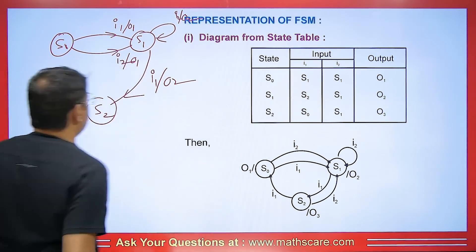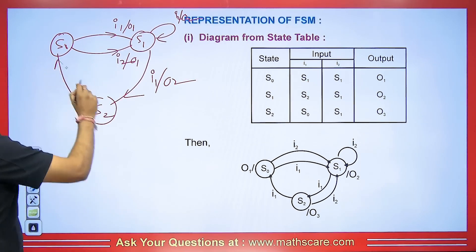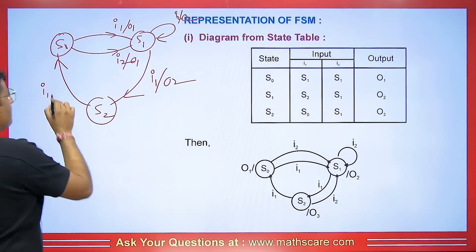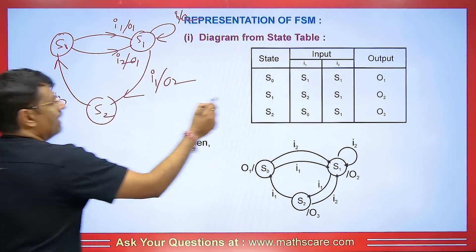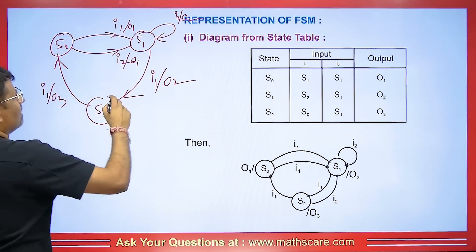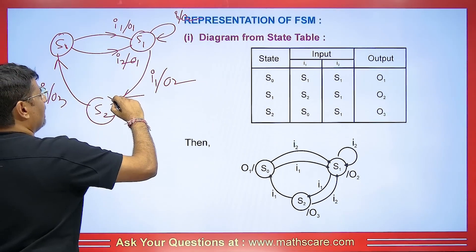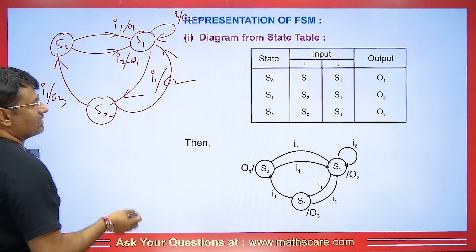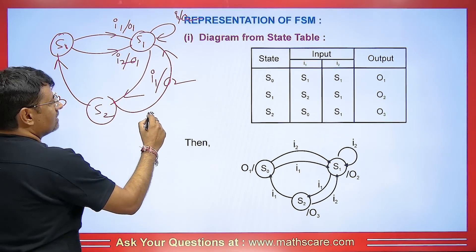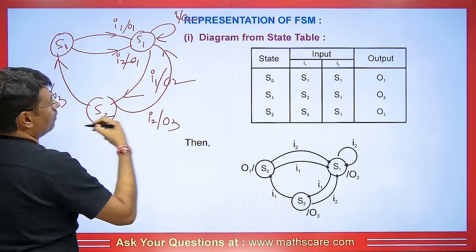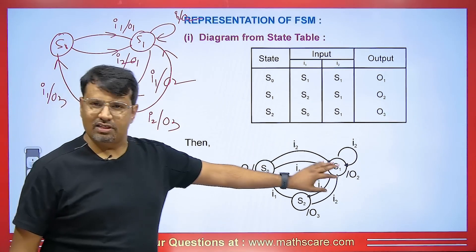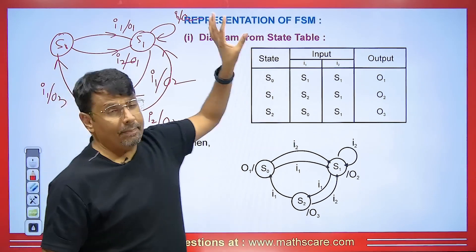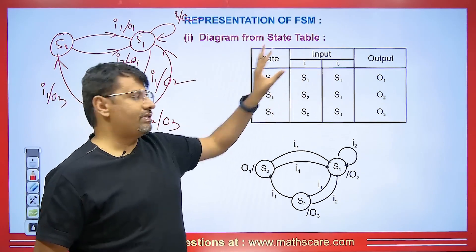Now S2 to S0: this is going from S2 to S0. In this case, the input I1 gives output O3. S2 is also going to S1, and again S2 going to S1 — with input I2 and corresponding output O3. This is how a state diagram is made. We can make a diagram from any given table.